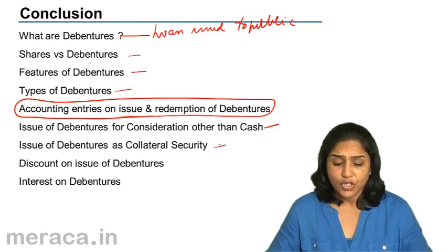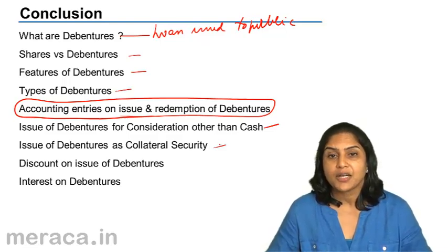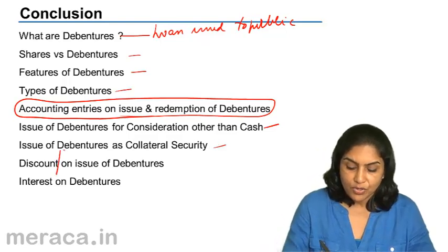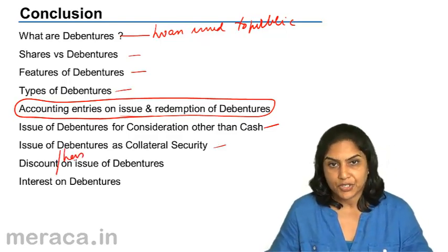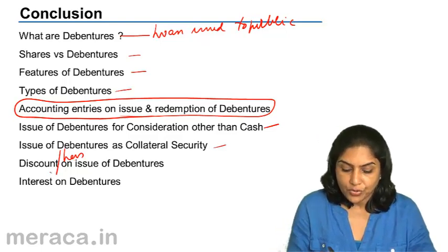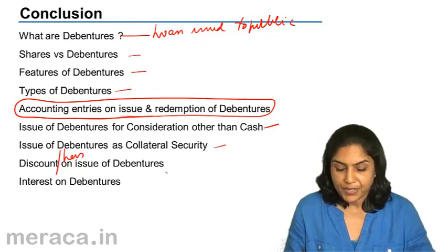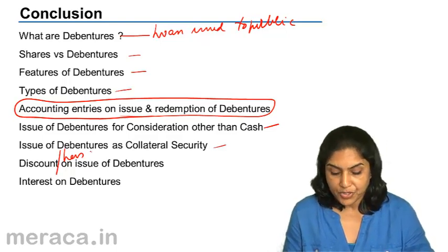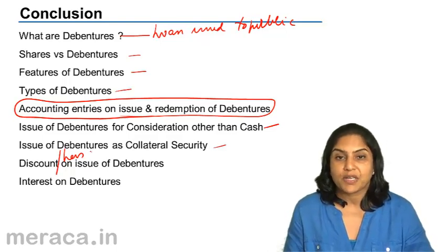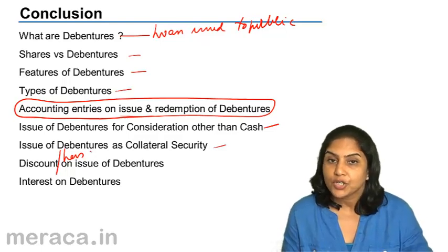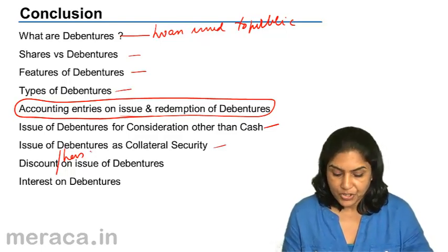We also discussed the treatment of discount or loss on issue of debentures. This includes not only the discount on issue of debentures but also the premium payable on redemption, which is expressed as loss on issue of debentures account debit to premium on redemption of debentures.